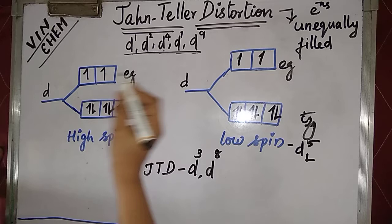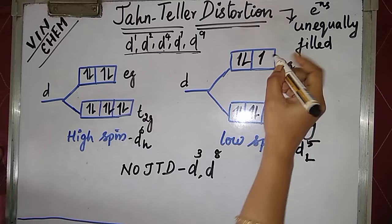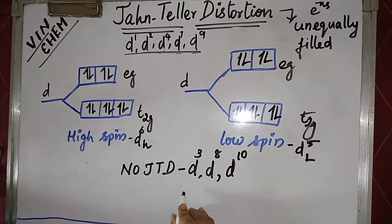For d9, distortion is there — unequally filled electrons. So distortion is there for d9. And for d10, there is no distortion.